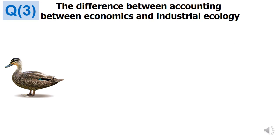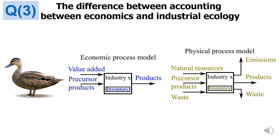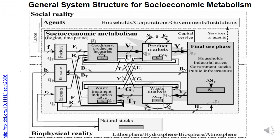For the third research question about a general bipartite graph, we looked at how both economics and industrial ecology model transformation processes. In economics, we record only three flows: value added generated, precursor products consumed, and products that come out. In industrial ecology, we are more comprehensive — we also account for natural resources, waste, and emissions to establish a physical system balance. The question is whether we can integrate both the economic and physical perspectives into a very general bipartite graph description of socioeconomic metabolism and industrial metabolism.